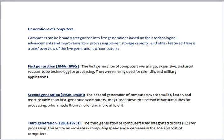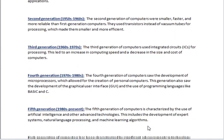2nd Generation, 1950s to 1960s. The second generation of computers were smaller, faster, and more reliable than 1st generation computers. They used transistors instead of vacuum tubes for processing, which made them smaller and more efficient.